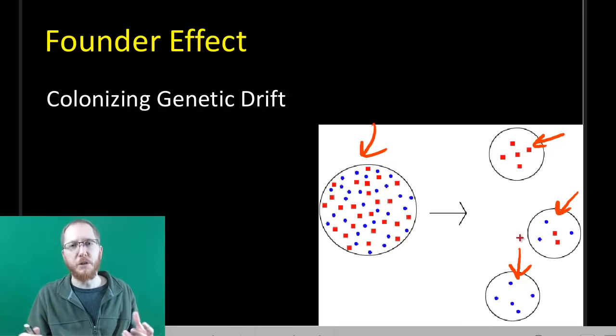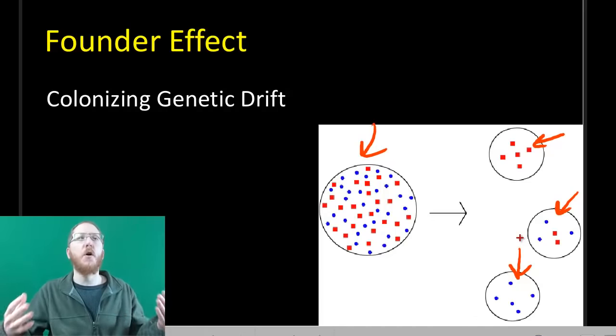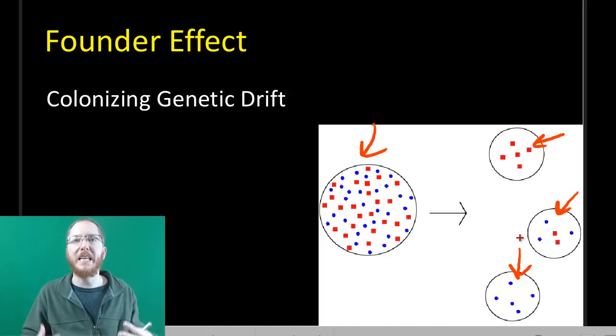Either because when they first splintered, they just didn't happen to have a very good mix. It would be like saying that you're going to have a bunch of people get shipwrecked, but if they're all almost identical, if they're all related, or they all happen to be the same ethnicity, you've lost a lot of variability because they're not very diverse in the first place.